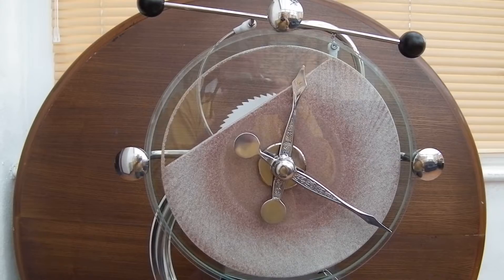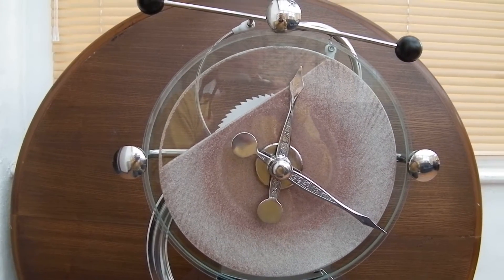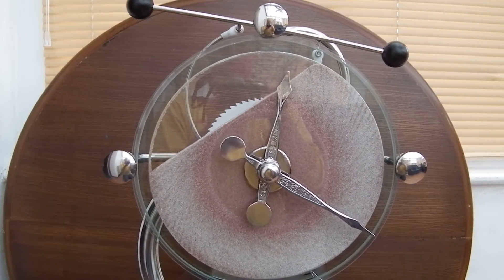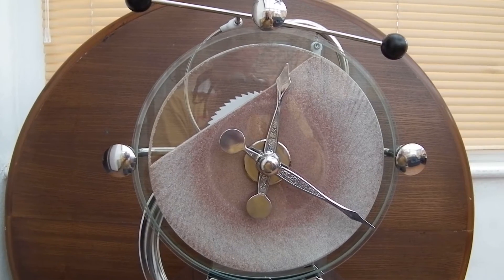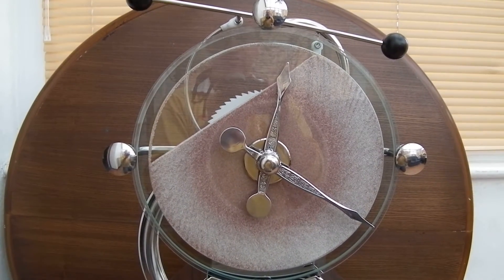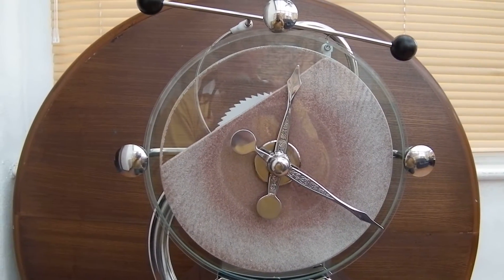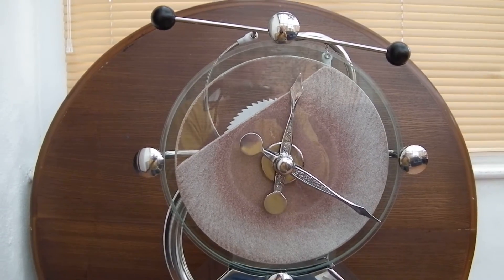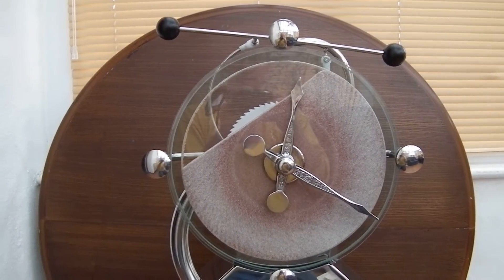The avalanche is caused by the glass sandwich circle rotating once every five minutes in, as it happens, an anti-clockwise direction.